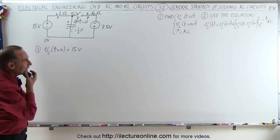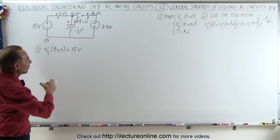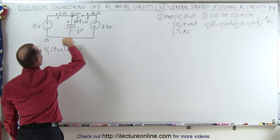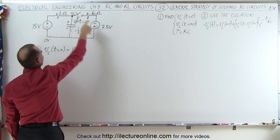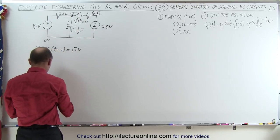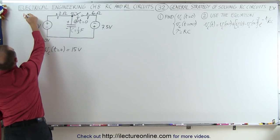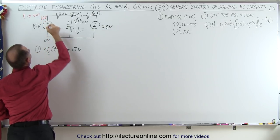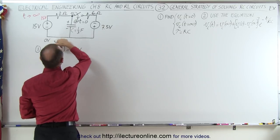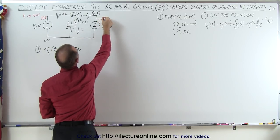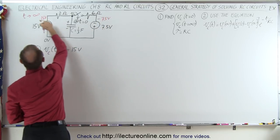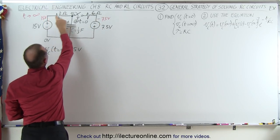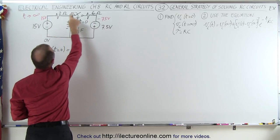Now the second one is going to be a little bit more tricky. We want to find the voltage across the capacitor when a large amount of time has gone by, when the switch has closed. When the switch closes, current will be flowing around the circuit. When t approaches infinity, this point will be at 15 volts, this point will be at zero volts, and this point will be at minus 7.5 volts. So there'll be a 22.5 volt drop across the two resistors.